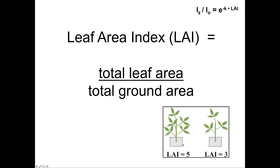Looking at this figure, if you compare the same ground area, the plant that has more foliage is going to have a higher LAI than the plant that has less foliage.